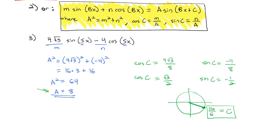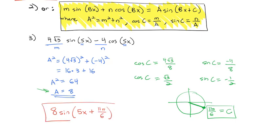We need both sine and cosine values because each one alone works for two angles, so we need both together to confirm we're in the correct quadrant. Now that we know a = 8 and c = 11π/6, we can write the expression as a single sine: 8·sin(5x + 11π/6), which is equivalent to our original problem.